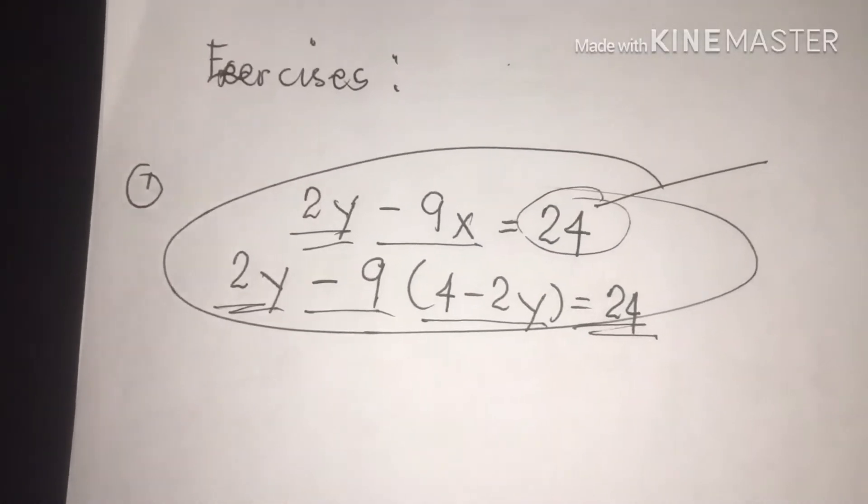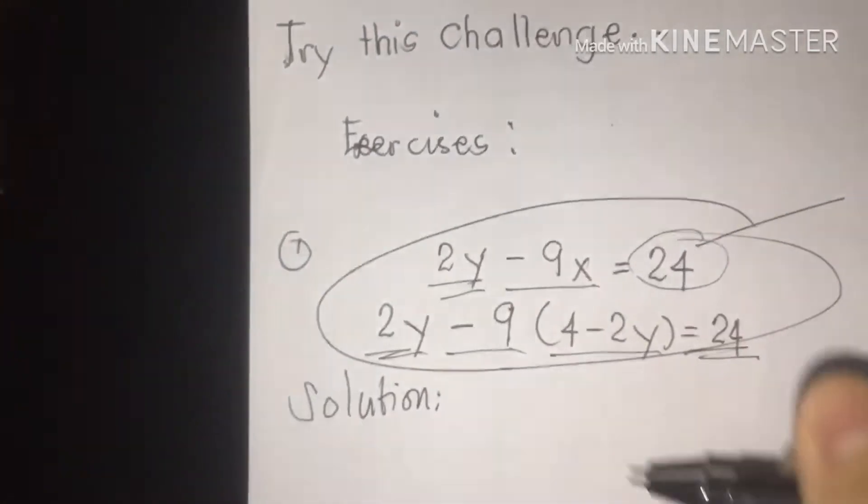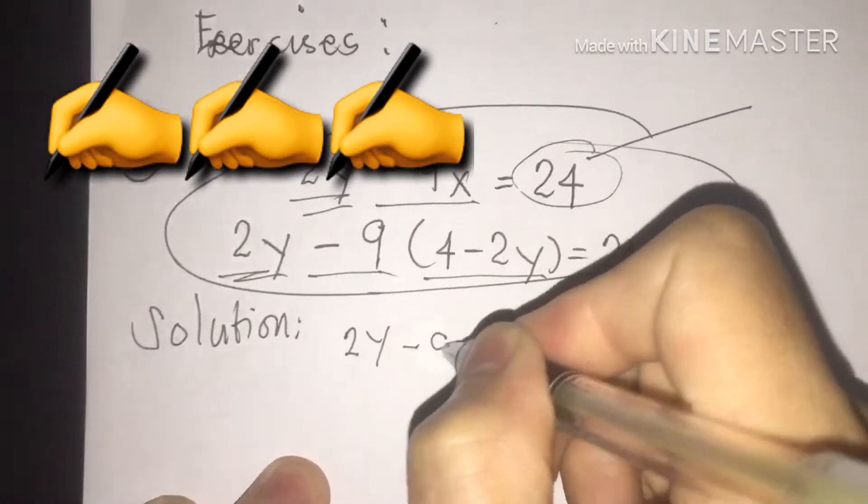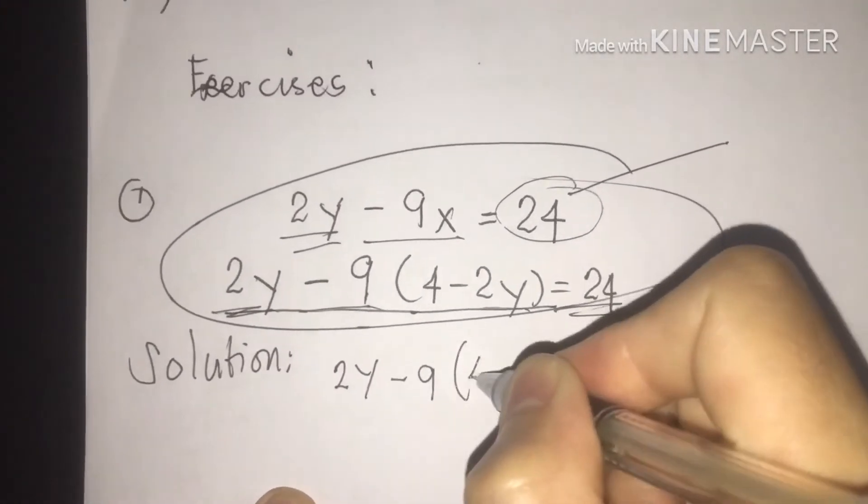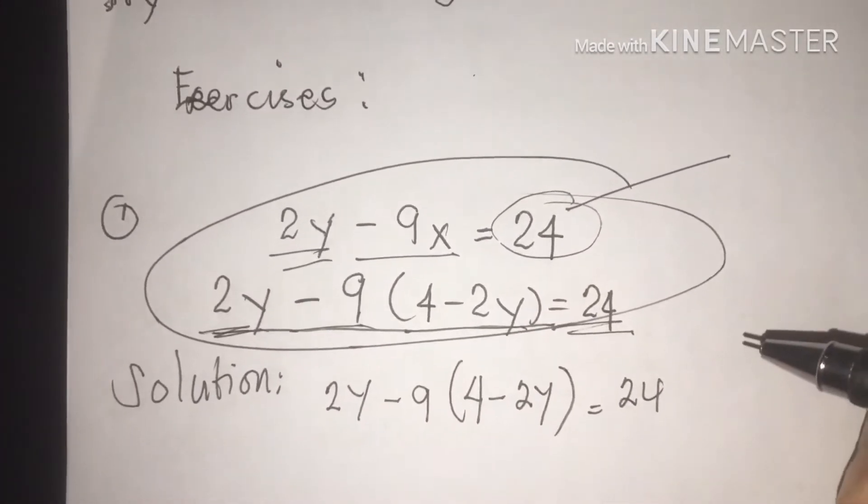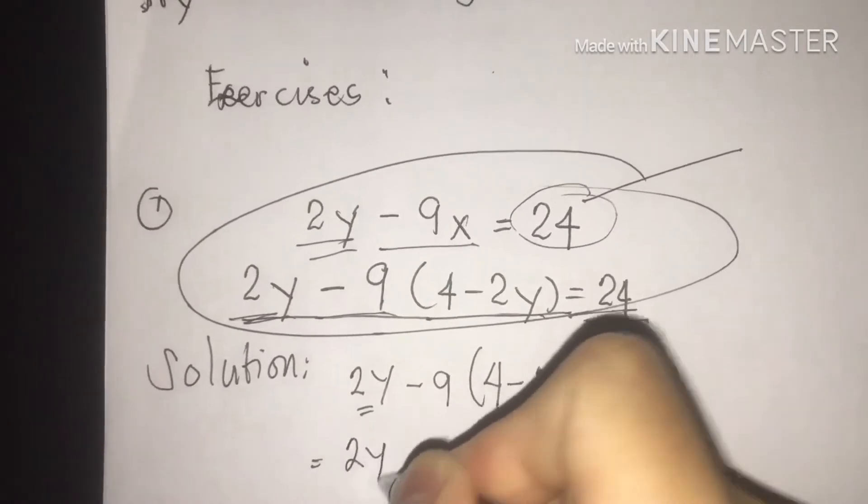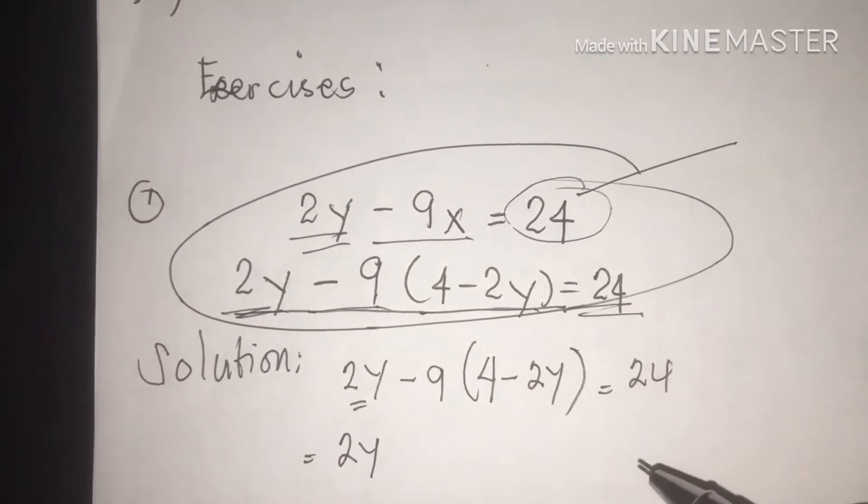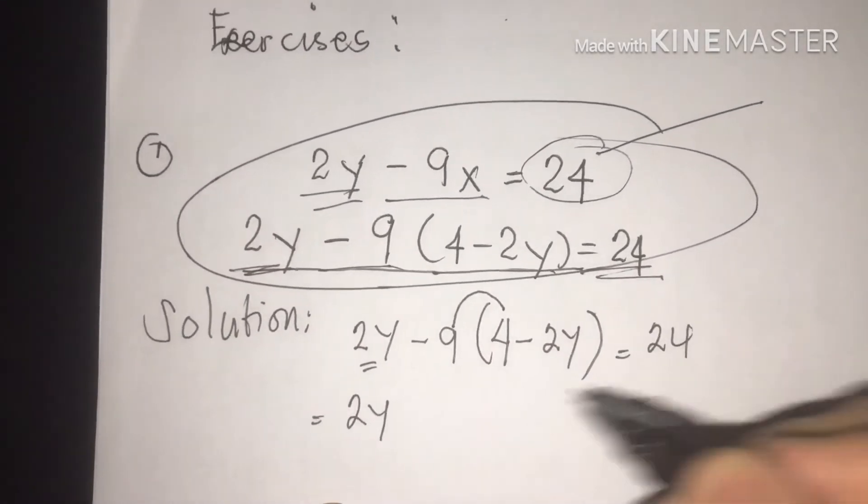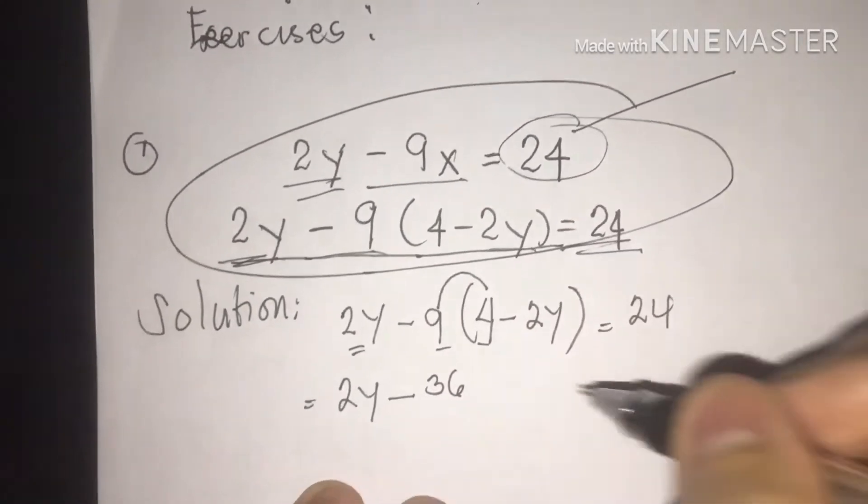So we are going to give the solution of this. Number one solution. We are going to write 2y minus 9, then close and open parenthesis, 4 minus 2y is equal to 24. We are going to write this 2y again. Then we are going to multiply. Open parenthesis class, that means you are going to multiply it. 9 times 4 class, we have 36, if I'm not mistaken.